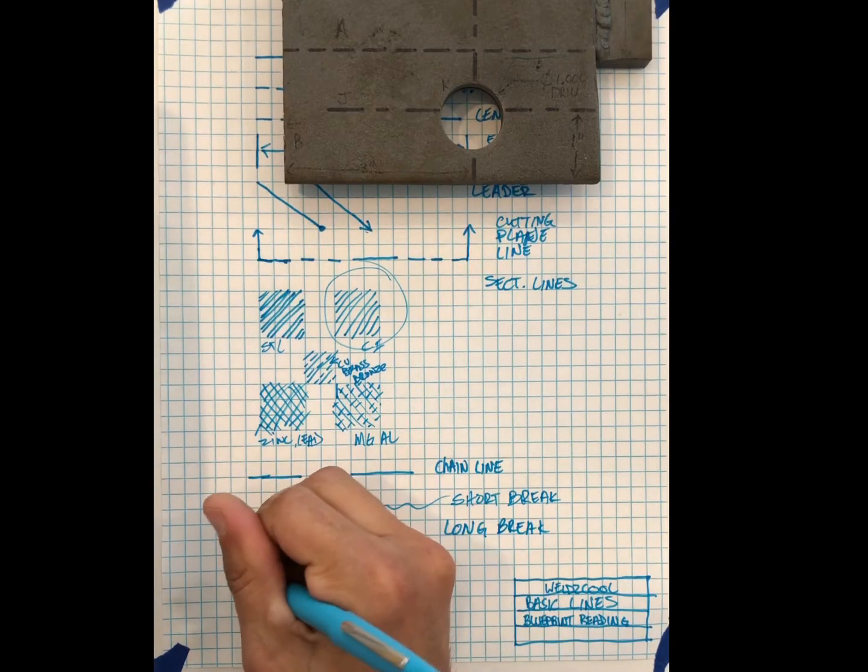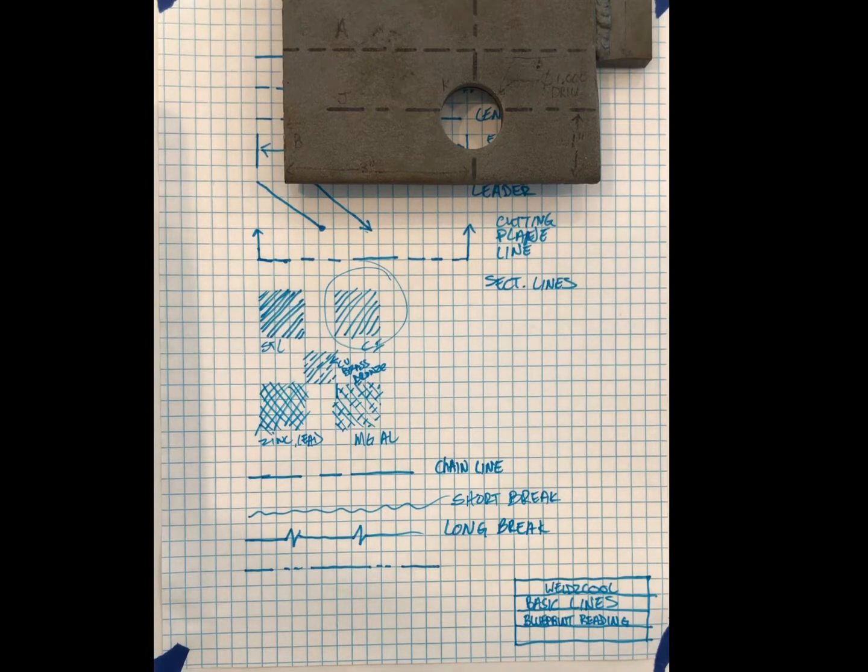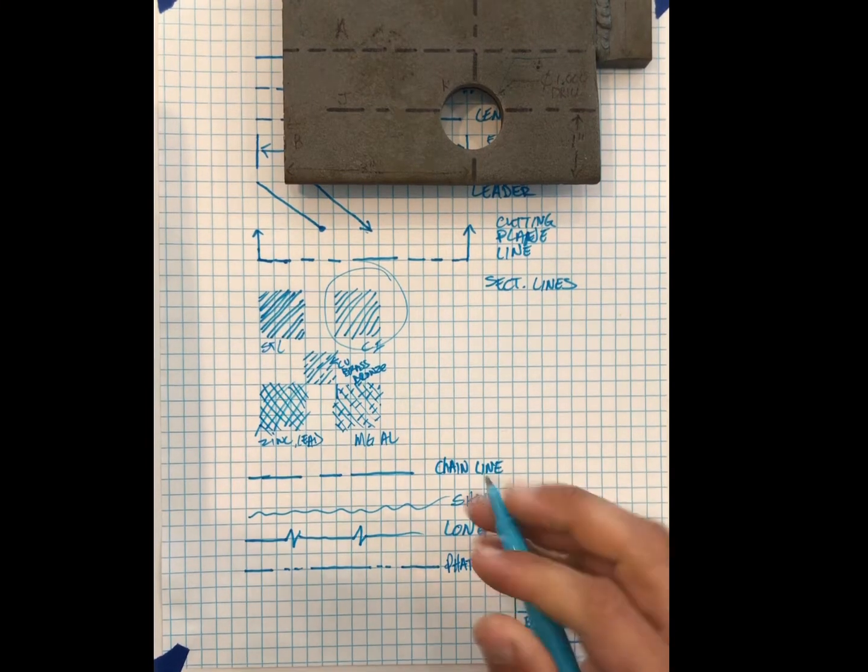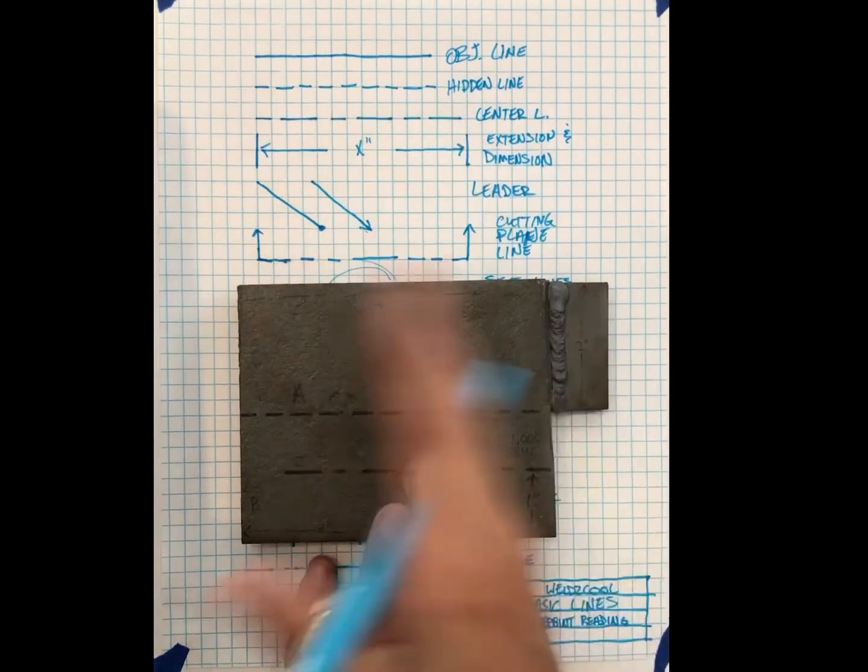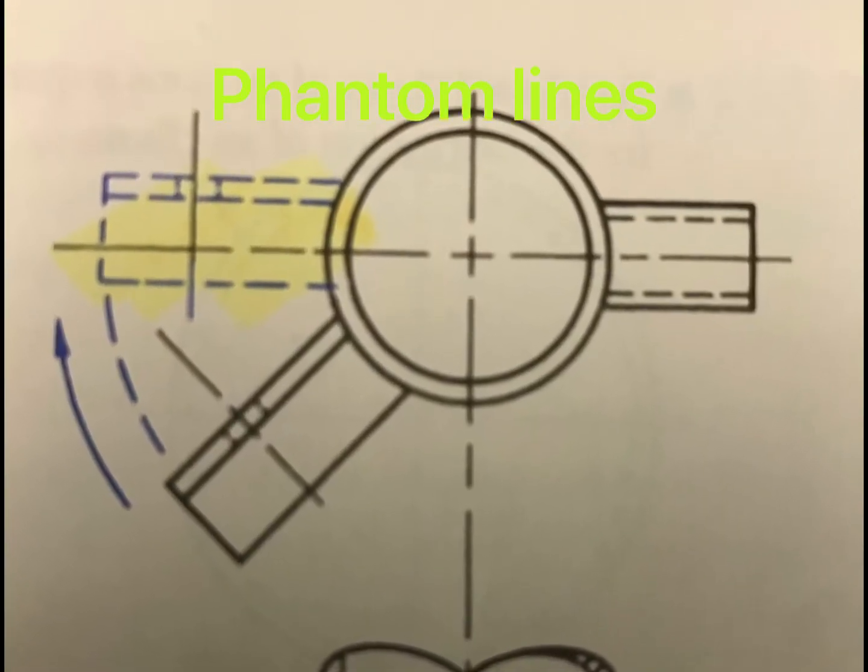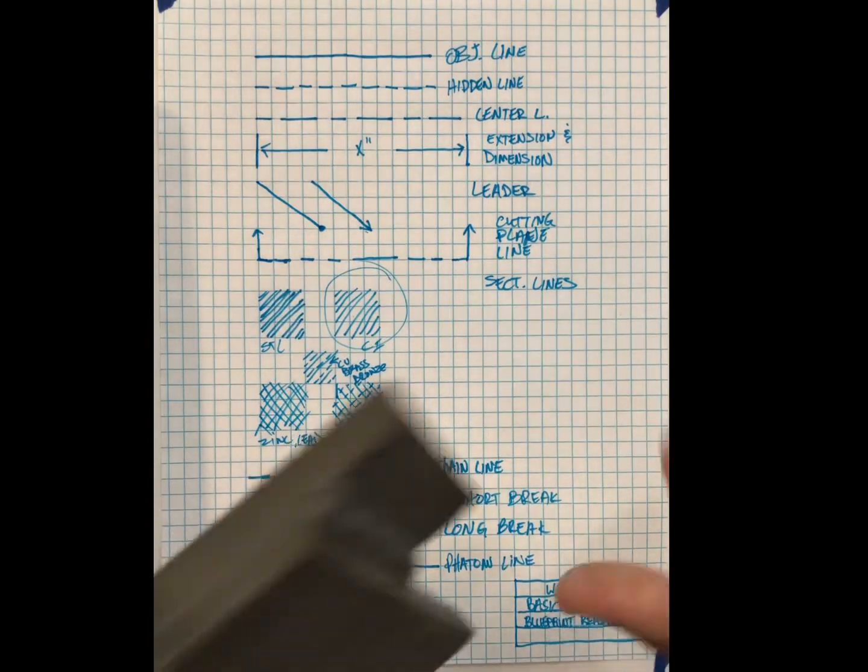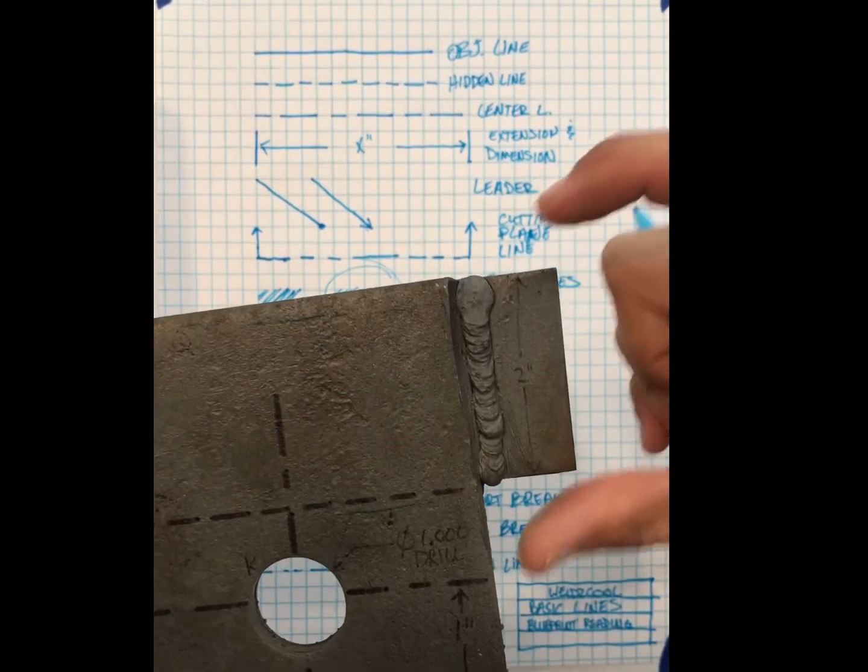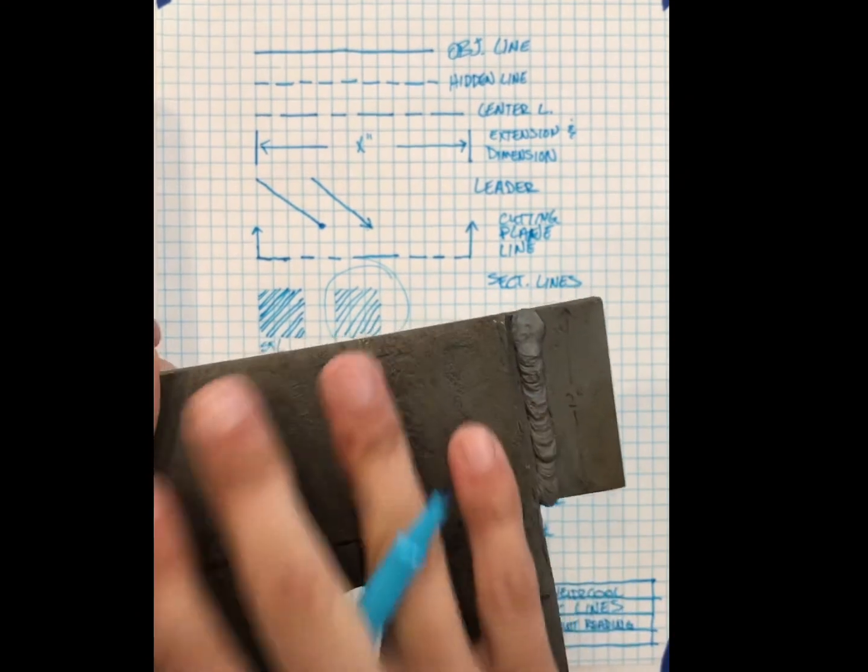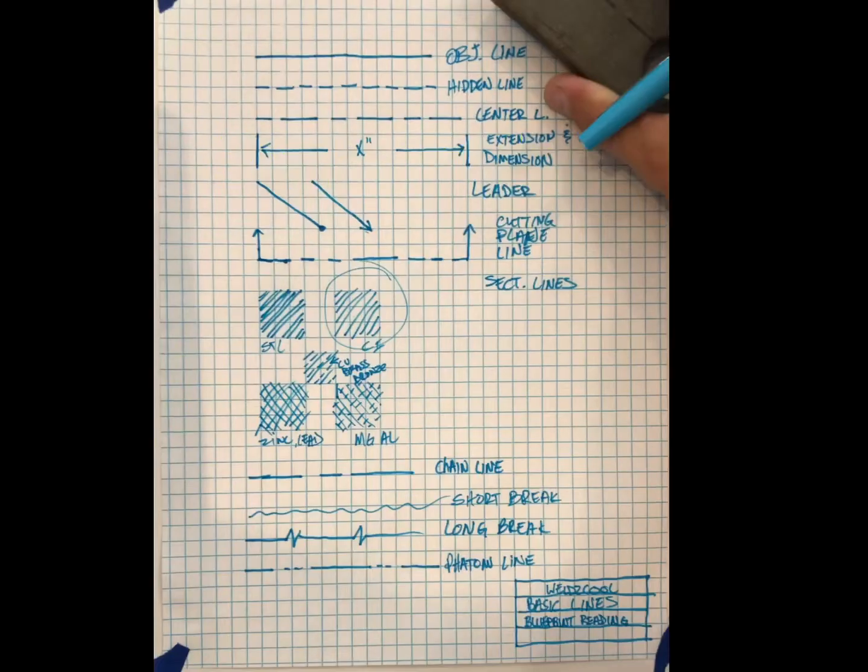And then the last thing is this phantom line. We use phantom lines maybe to indicate different positions of a part. So maybe we got this and then this part can swivel, so we draw maybe at a different color with phantom lines that it can swivel up here and use it to show the existing components and how these two would fit together. So maybe this thing got locked into another component and so this component is drawn all in phantom lines. And then we can fit our new component that we're making that uses object line, hidden lines, and it just shows that it's like a mating part. So that's a phantom line.